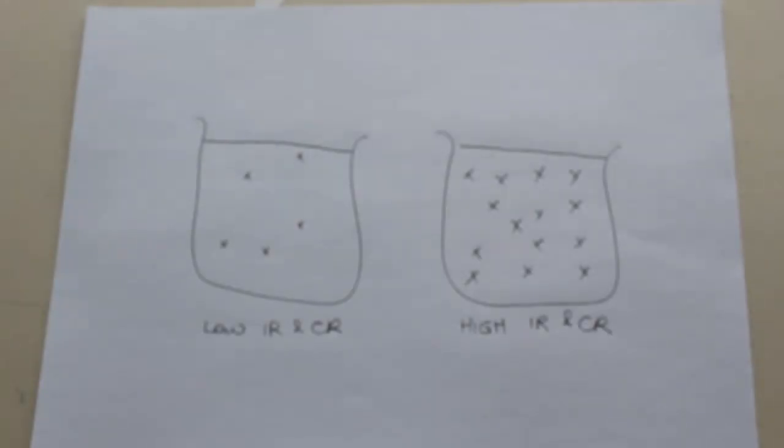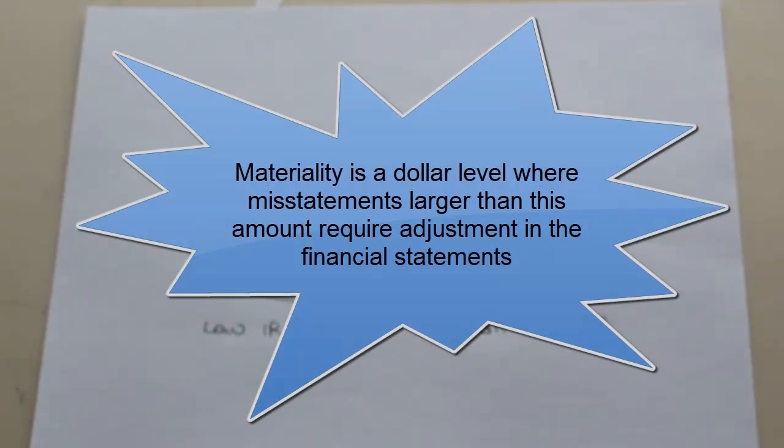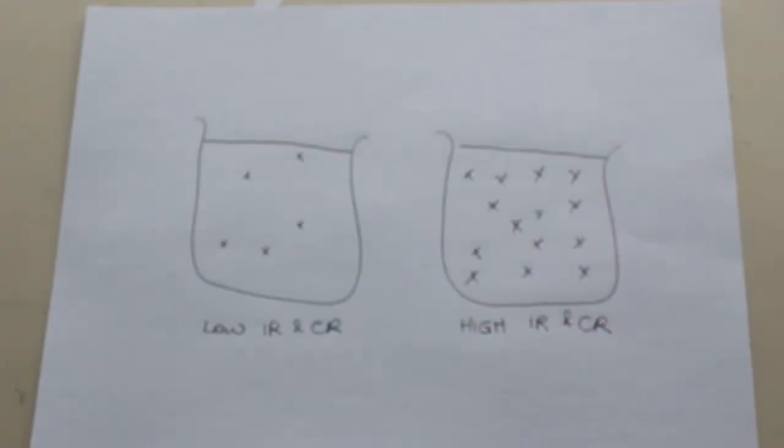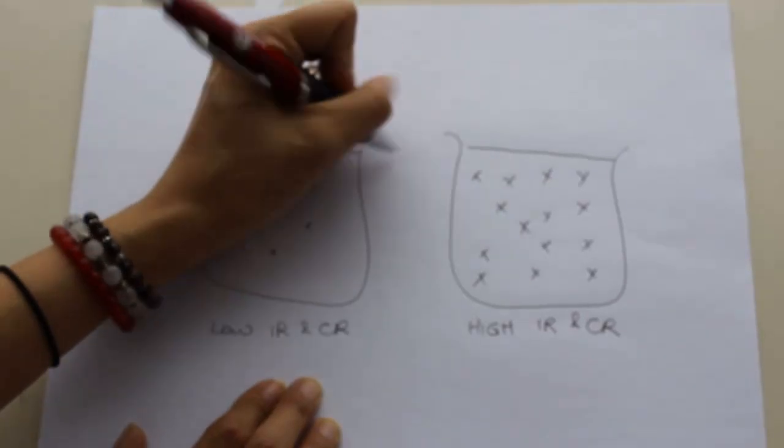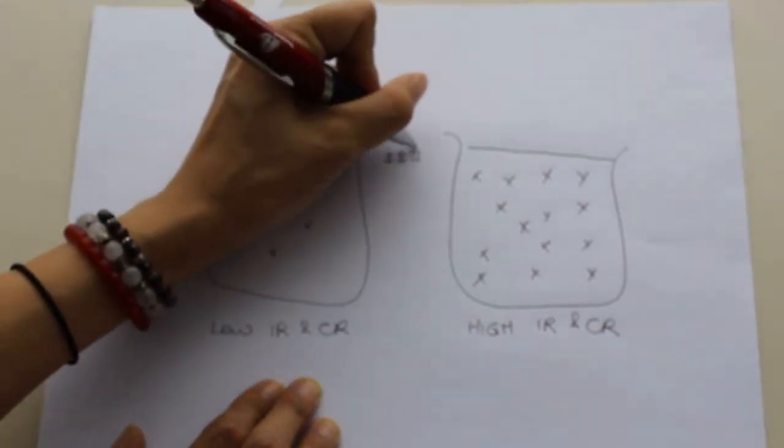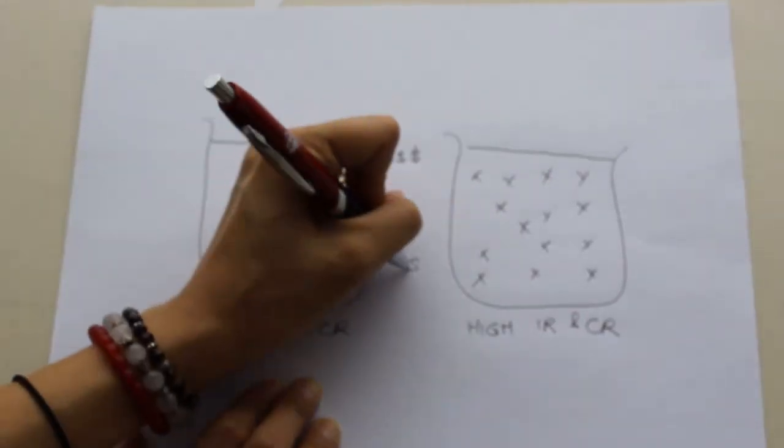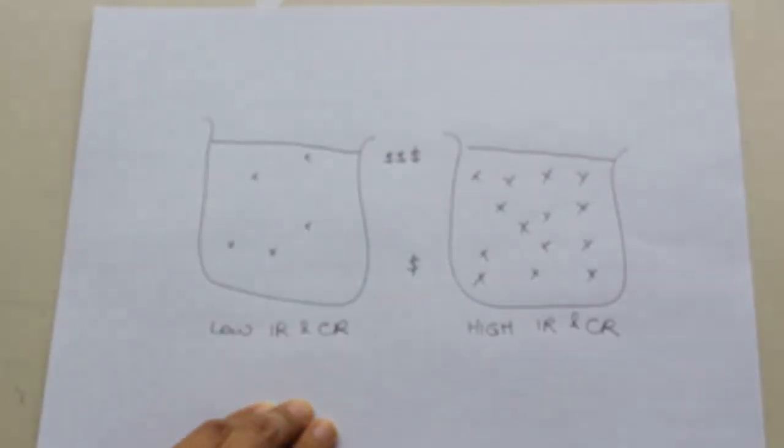So what is our materiality level? A materiality level is some dollar value amount where every misstatement over that amount, we're going to ask the client to make an adjustment because we think it's a material misstatement. So at the top here, if we think these are the very large ones and these are the smaller ones,